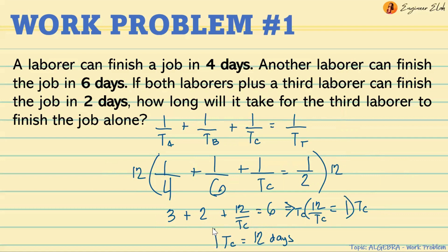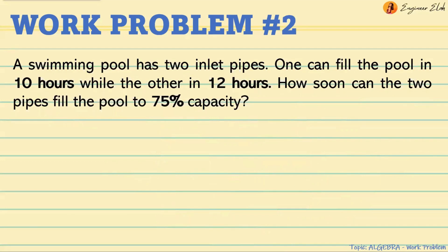So that is the answer for this problem. Let's proceed to the next problem, problem number two. A swimming pool has two inlet pipes. One can fill the pool in 10 hours while the other in 12 hours. How soon can the two pipes fill the pool to 75% capacity?